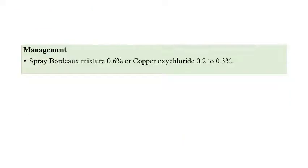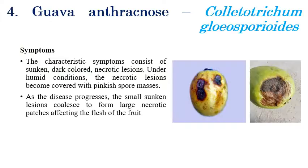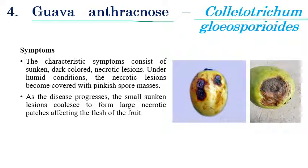Symptoms can be seen on both leaves and fruits. For management of red rust, spray Bordeaux mixture at 0.6 percent or spray copper oxychloride at the rate of 0.2 to 0.3 percent to manage the disease. Coming to the next disease — gourd anthracnose, which is caused by Colletotrichum gloeosporioides. The name itself indicates black color spots.